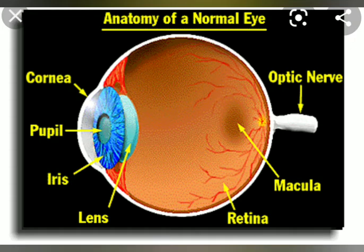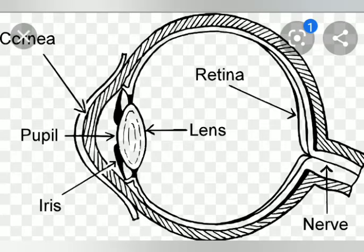Cornea: it is the transparent outer covering of the eye that protects the pupil and the iris. Eyelashes: they help to stop dust from getting into the eyes.